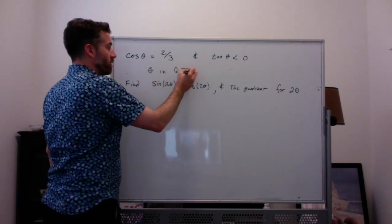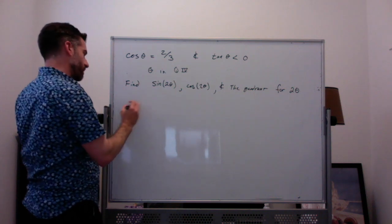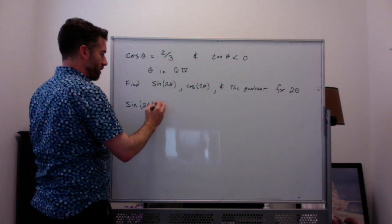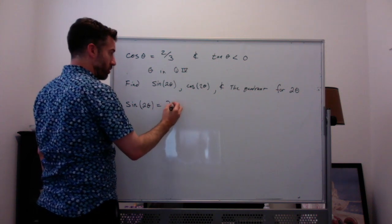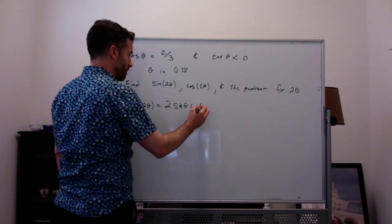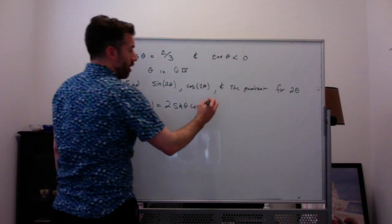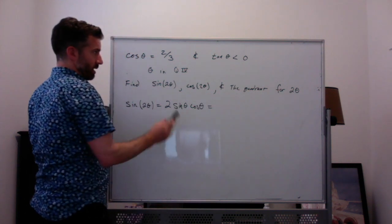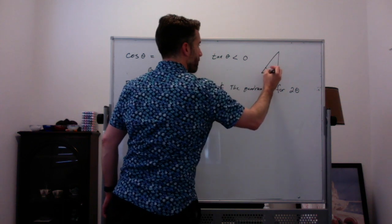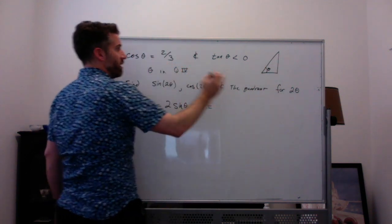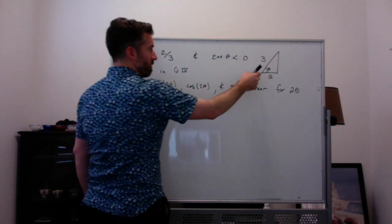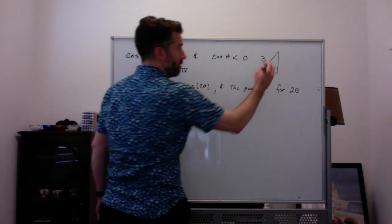We're also going to need to find sine of theta, because to find sine of 2 theta, we're going to use the formula that sine of 2 theta is equal to 2 sine of theta cosine of theta. I don't know sine of theta, so I'm going to draw a triangle for that.